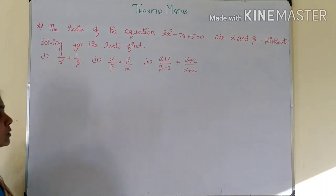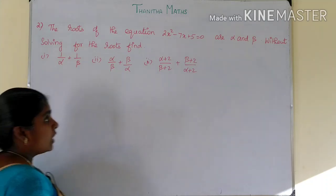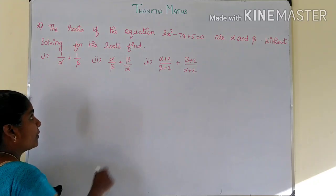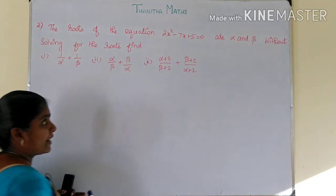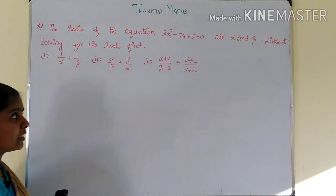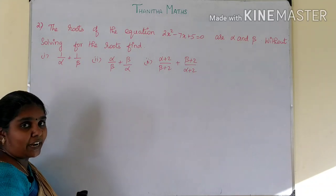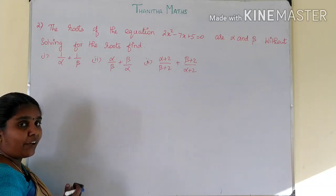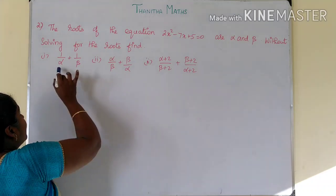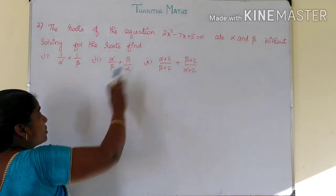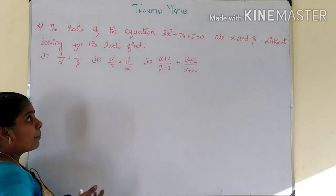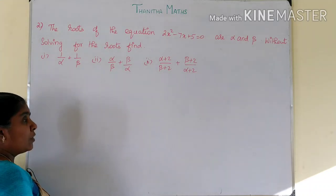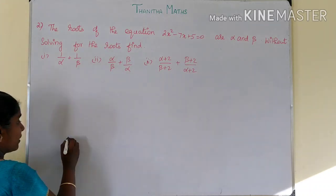We need to find the sum of the roots and the product of the roots. We could use the factorization method or formula method to solve directly for alpha and beta, but instead we will use the sum and product of the roots to solve all the required expressions.